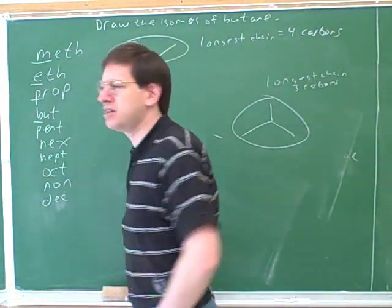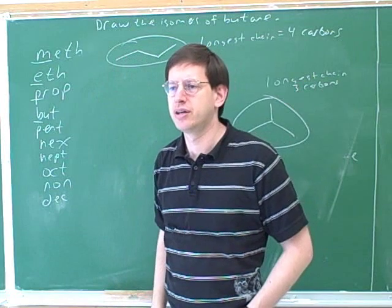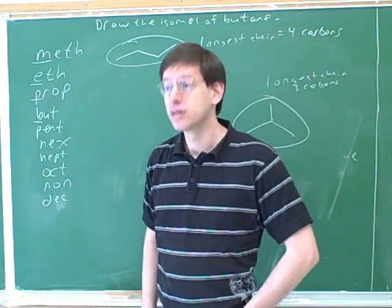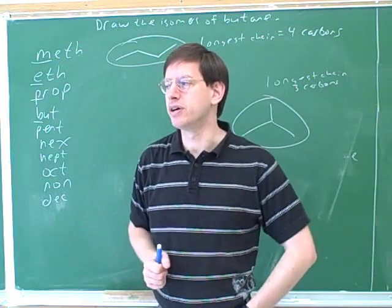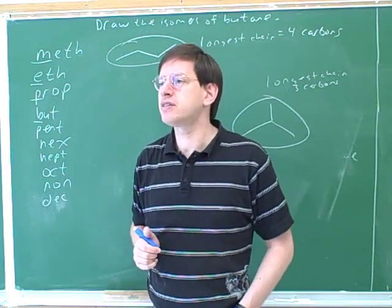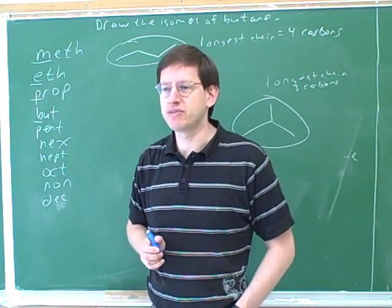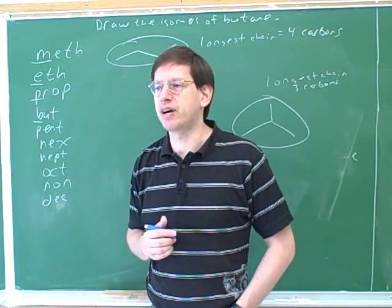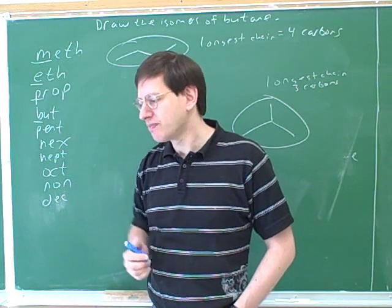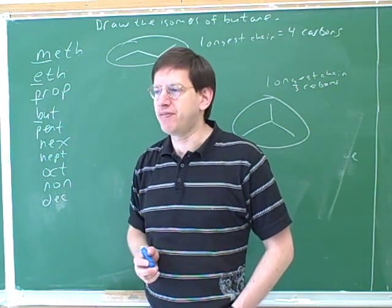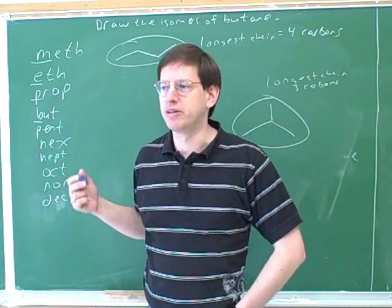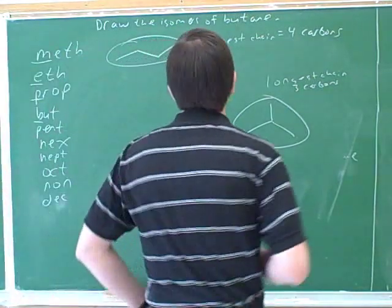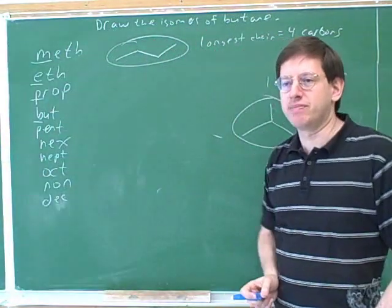What does isomers mean? What does it mean if two molecules are isomers? It's the same atoms but in a different order. We want to be more precise: not just the same atoms, but the same numbers of atoms. It's not good enough that they both have carbons and hydrogens — they have to have the same number of carbons and the same number of hydrogens. Another way of putting that is they have to have the same molecular formula, because the molecular formula gives you the numbers and the elements. So these are isomers because they have the same numbers of atoms.